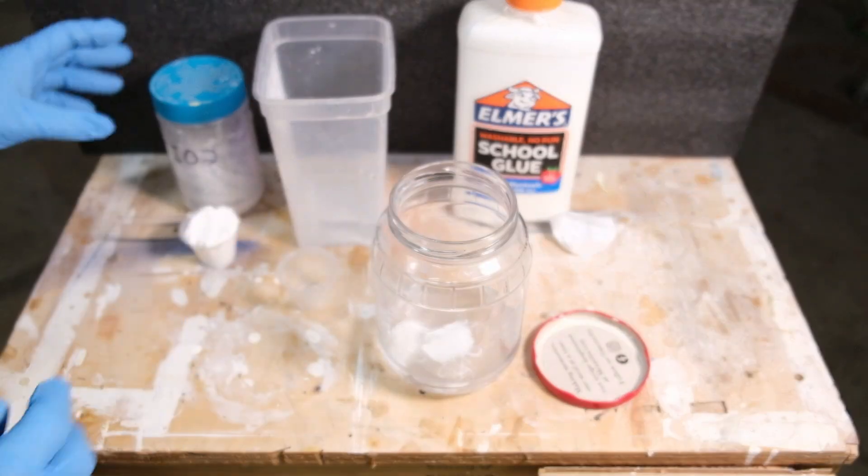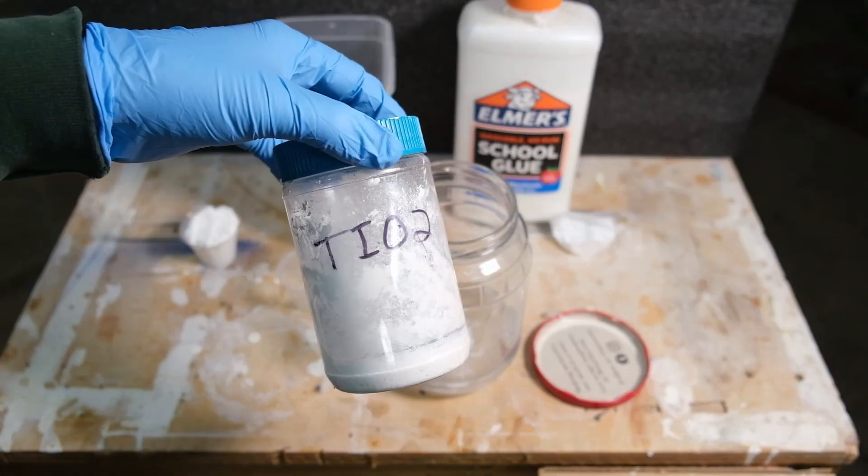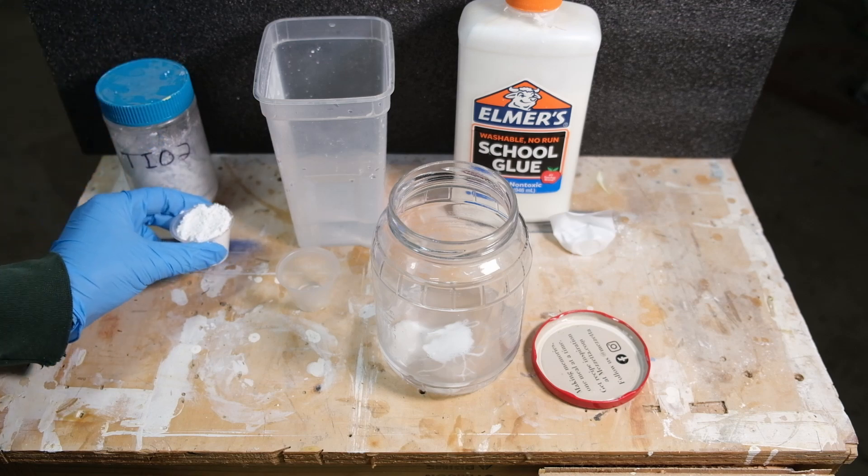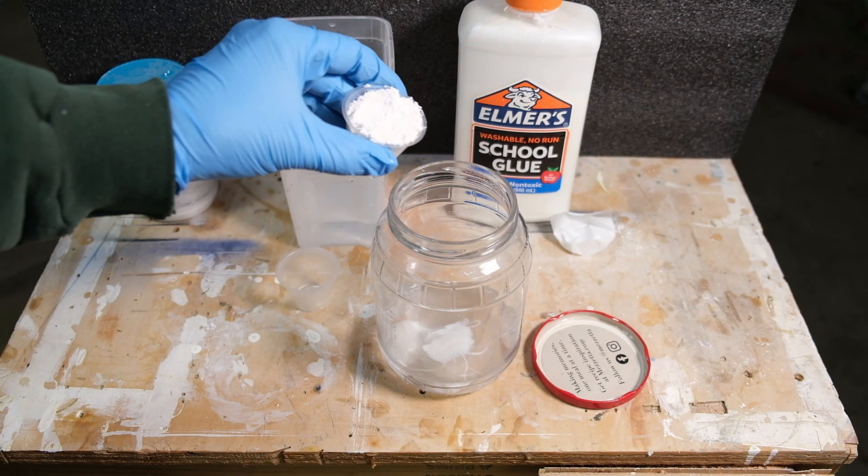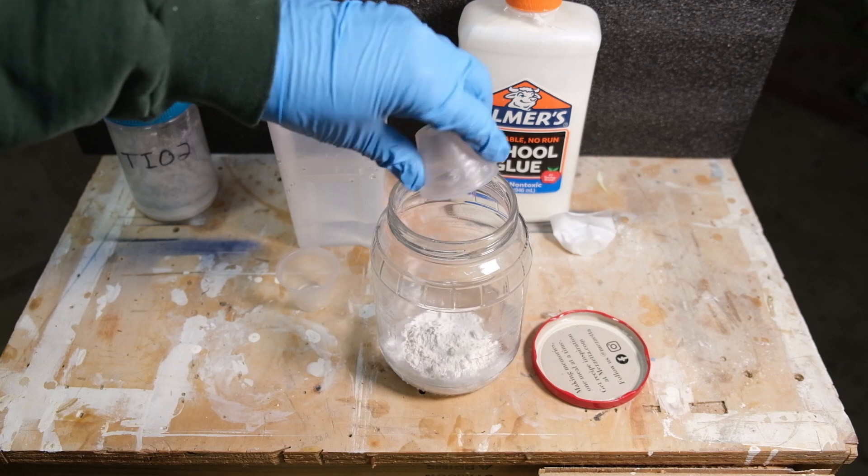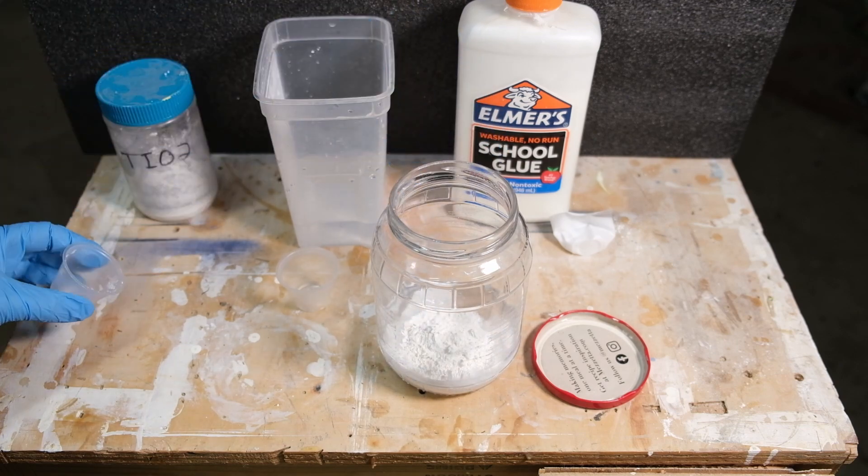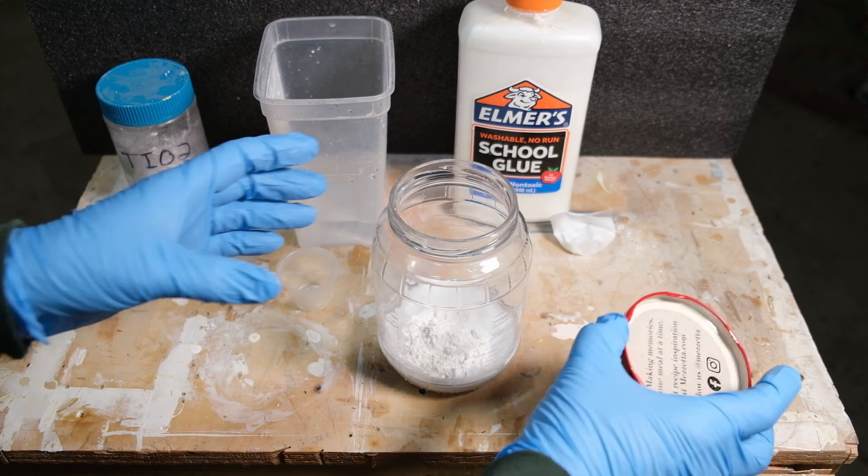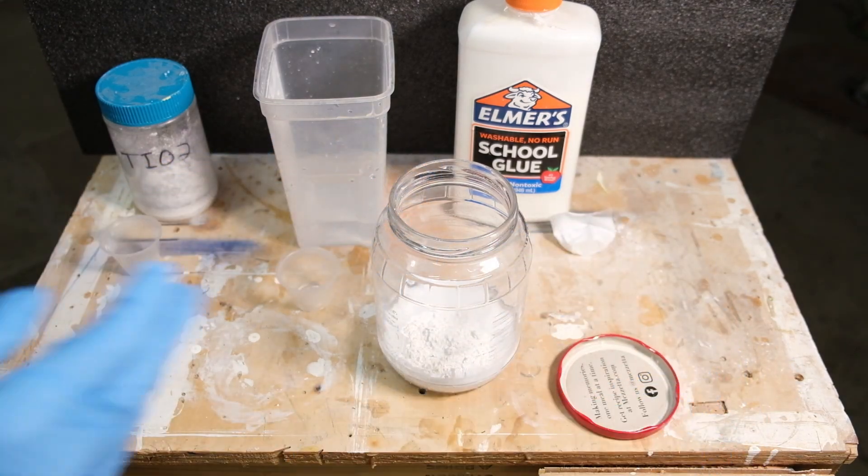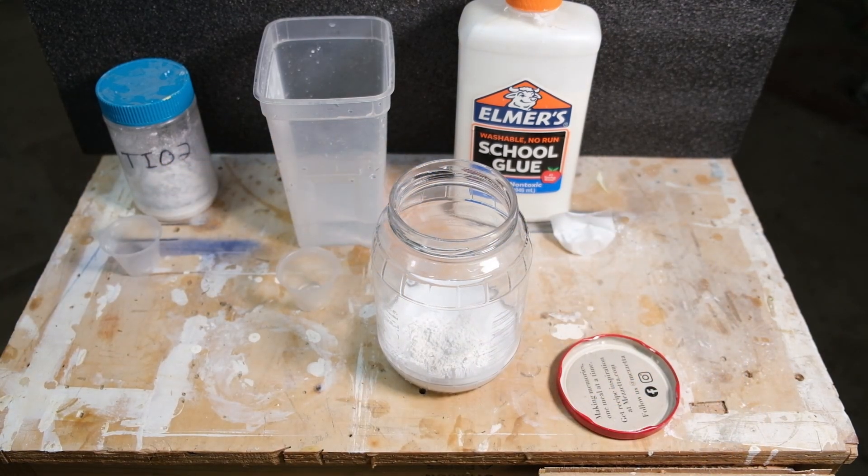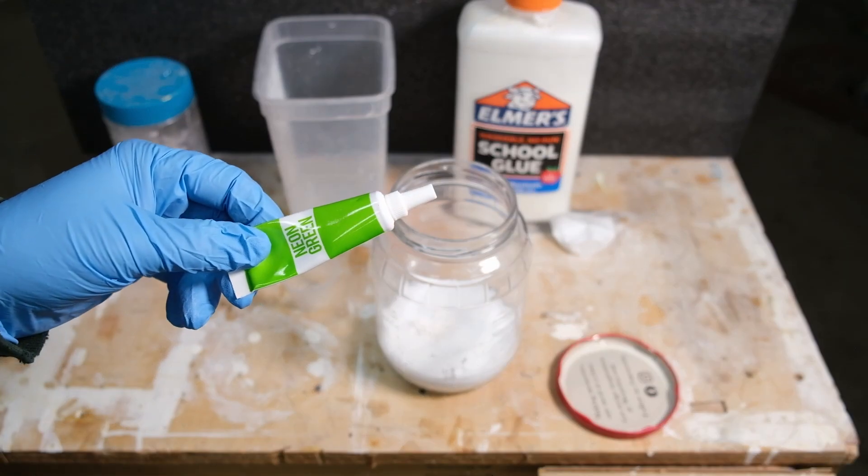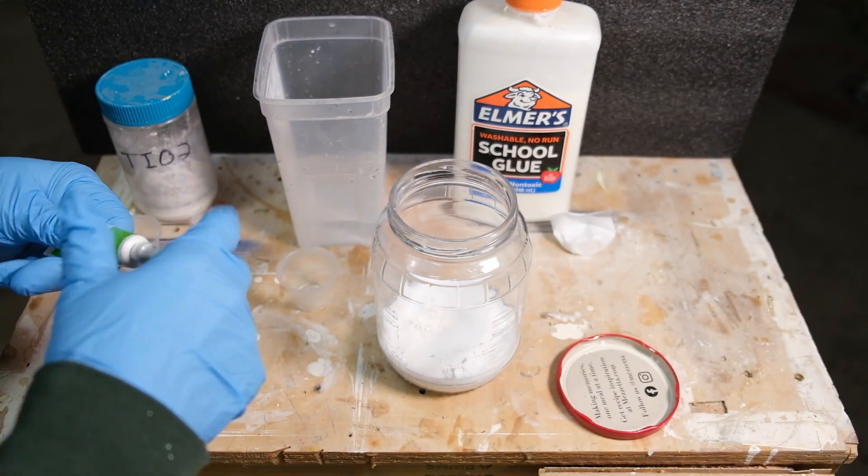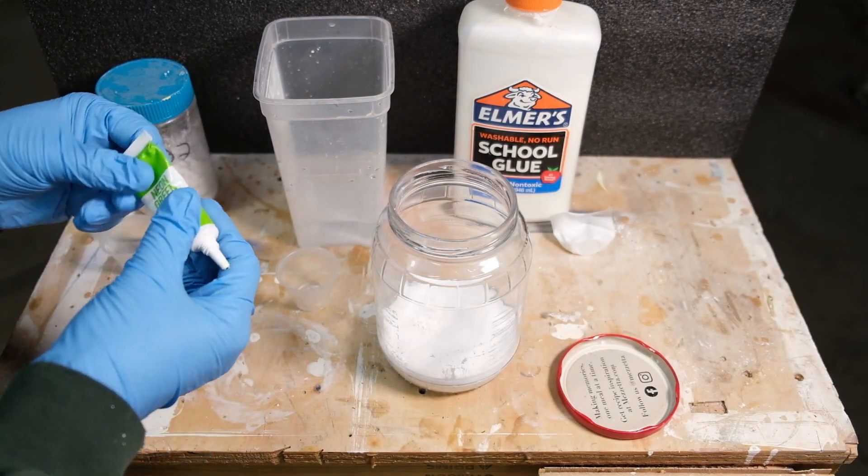And the final ingredient that we're going to use is some TiO2 and you're going to use one part of that. Dump that in there. Now before I mix this up, I suggest that you add some food coloring to this mix. It just helps you when you go to paint it on so that you can kind of see and make sure that you're getting a good even coating on the tile.